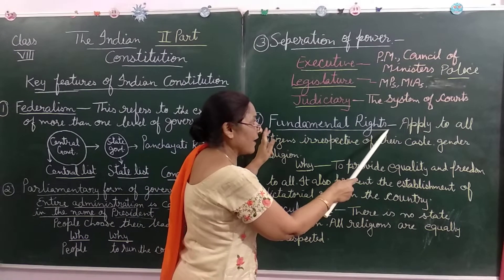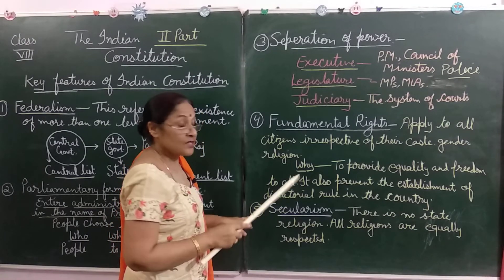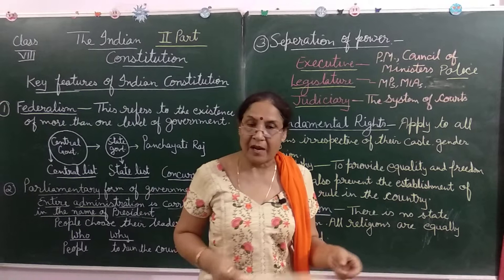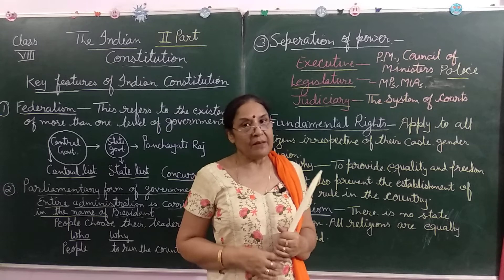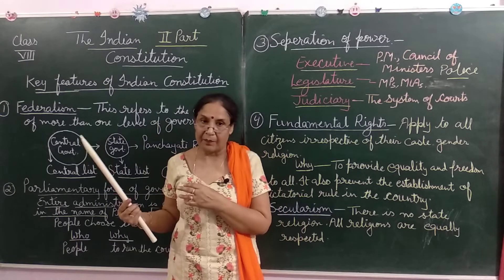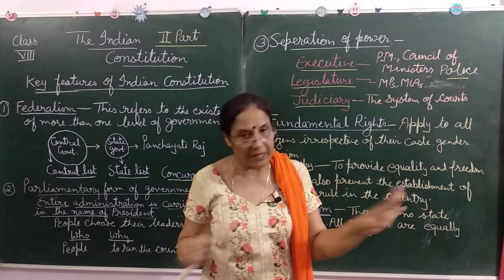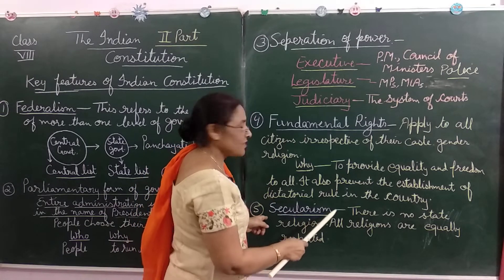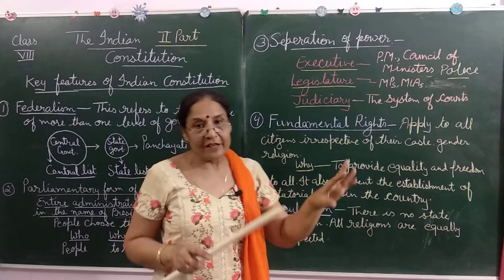The fifth feature is Secularism. India is a secular country, meaning there is no state religion. All religions are equally respected. For example, Pakistan is an Islamic country, but in India there is no single official religion — whether Hindu, Islam, Zoroastrian, or Parsi — all religions are equally respected. That is why India is a secular state.